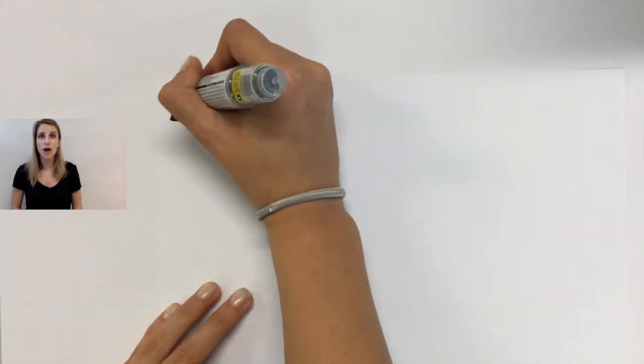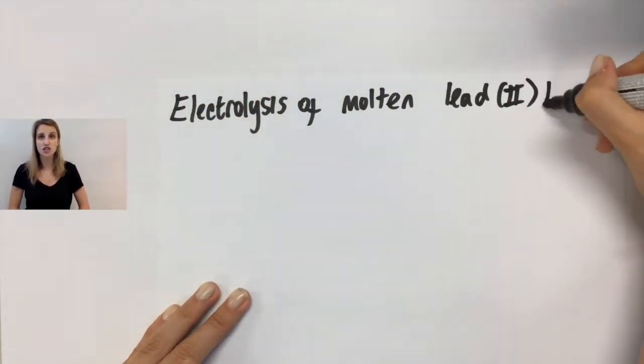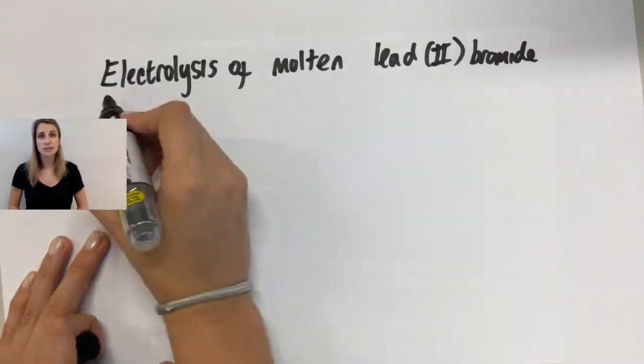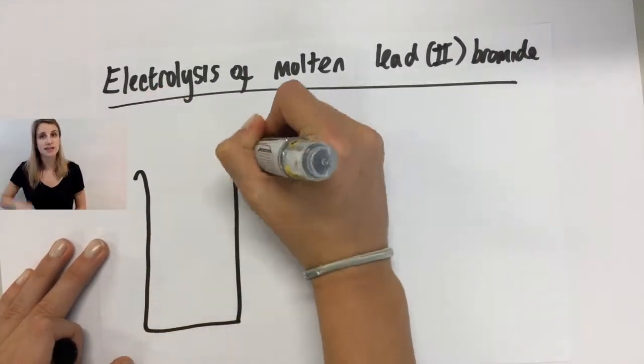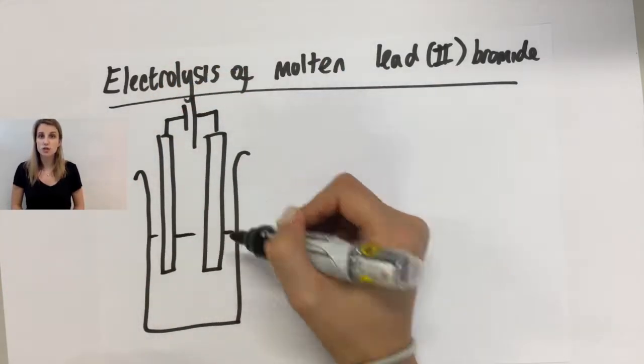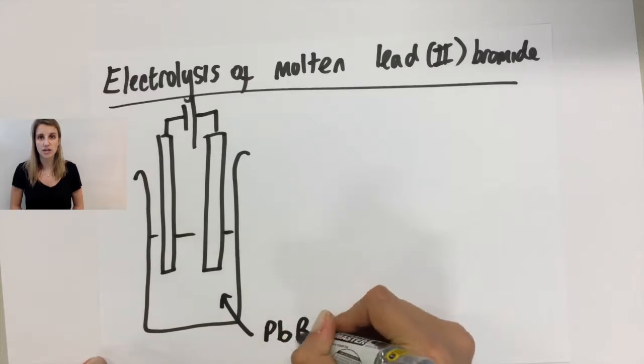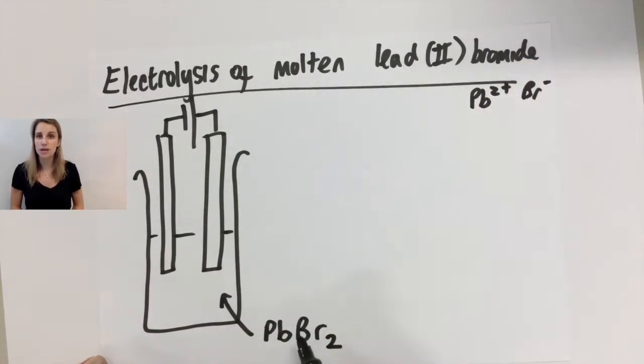Here's my basic setup for electrolysis. In this case, it's the electrolysis of lead(II) bromide, which means it's Pb, the symbol for lead. 2 means it's 2+ in the ionic compound. And we know that bromine, because it's in group 7, forms a 1- charge. So overall, that means the compound is PbBr2.